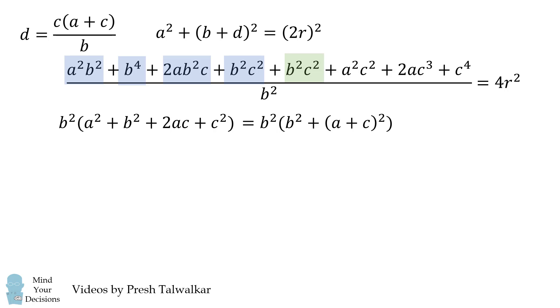Now we can do a similar thing for the next four terms. If we factor C squared from these, we actually get the same resulting factor. So we have C squared times the quantity B squared plus the quantity A plus C squared.